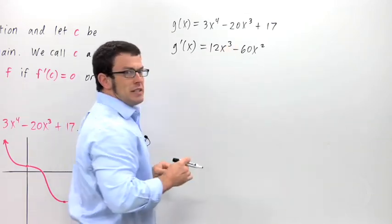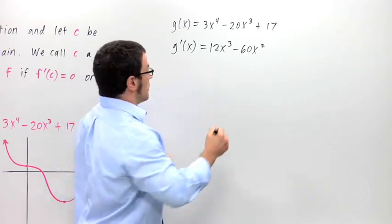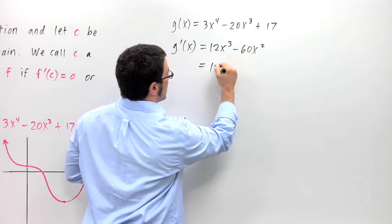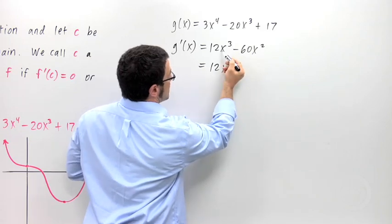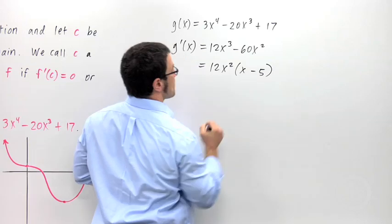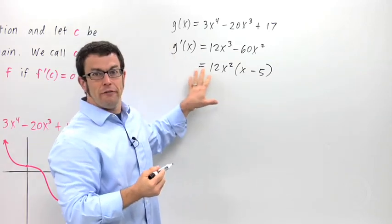Let me factor this. It'll always be easier to find critical points if I factor the derivative. I'm going to pull out the common factor of 12x^2, and that leaves x minus 5. So this is my derivative factored.